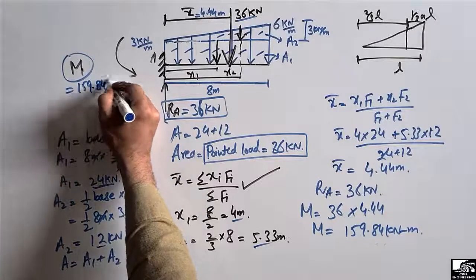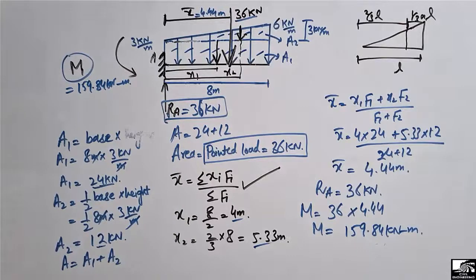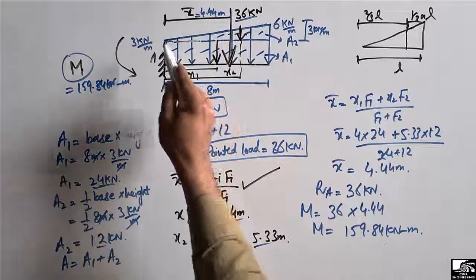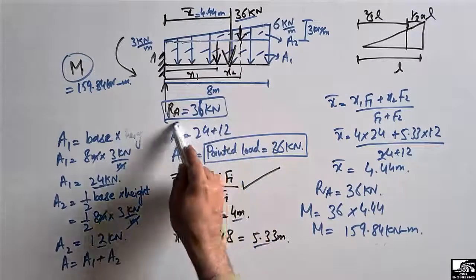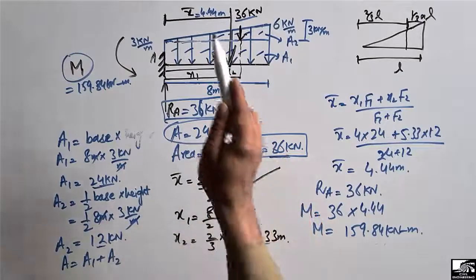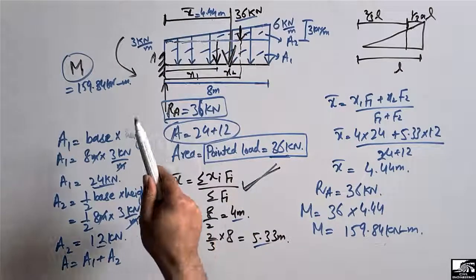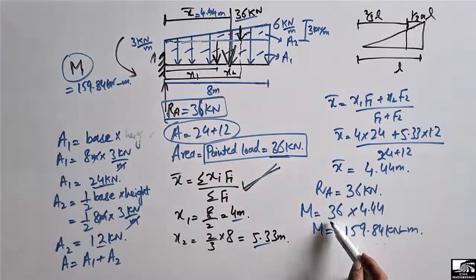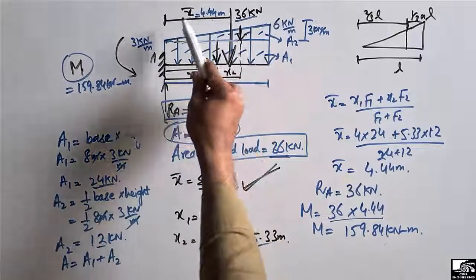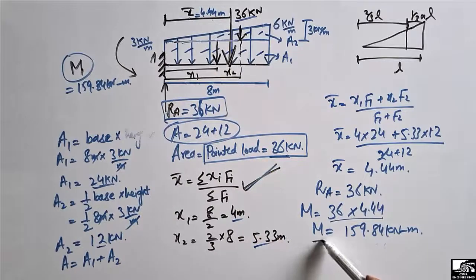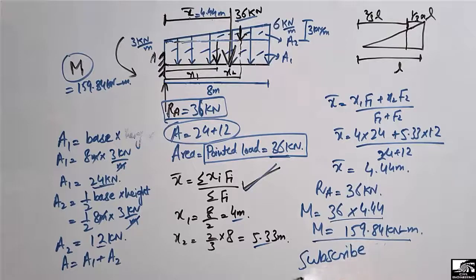This is how to find support reactions when there is a trapezoidal load on a cantilever beam. First, divide the trapezoid into two portions and find the load of each. Add them to get the total pointed load, then find the centroid using the formula. Finally, multiply the total load by the moment arm to get the moment. Hope you guys understand — don't forget to subscribe to our channel for daily engineering videos.